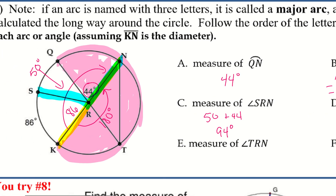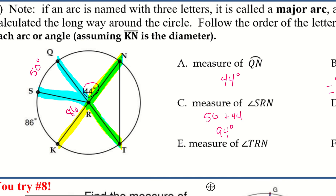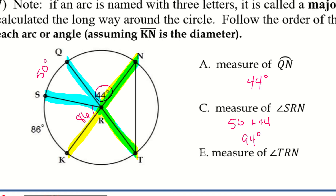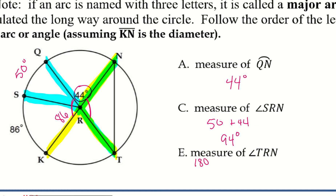For E, arc TRN — T to R to N. I notice another straight line, so we have another diameter, and I also see vertical angles. Using the 180-degree approach: 180 minus 44 gives me 136 degrees. So that arc is 136 degrees.